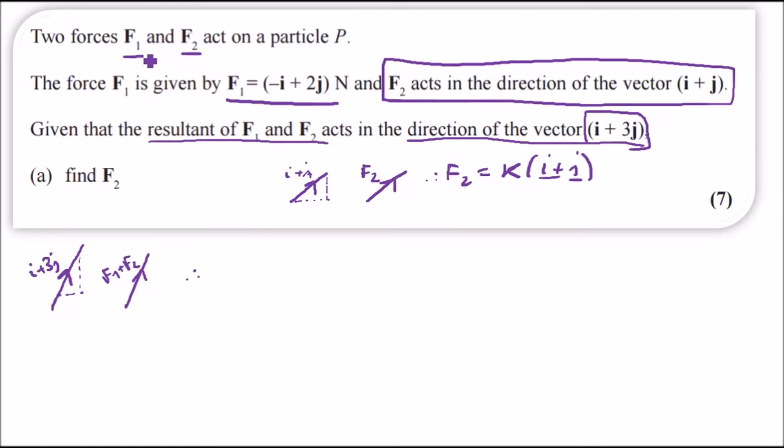And therefore that means f1 plus f2 must equal some scale factor, let's call it c this time, of i plus 3j. Easy. And now if you think about it we have an equation, we can just plug in, and here they want us to find of course f2, so technically we just have to find this value by plugging in what we know of f1, what we know of f2, and then solve it simultaneously.